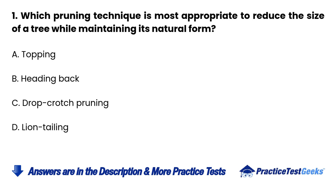Question 1. Which pruning technique is most appropriate to reduce the size of a tree while maintaining its natural form? A. Topping. B. Heading back. C. Drop crotch pruning. D. Lion tailing.